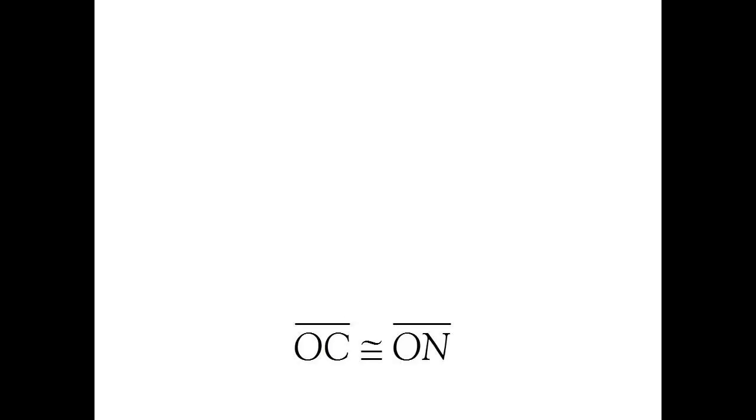So first, let's take a look at where you need to end up. Think about how you would arrive there by working backwards. In our case, we're trying to prove that segment OC is congruent to segment ON.